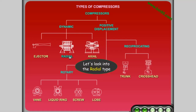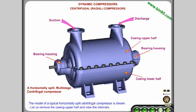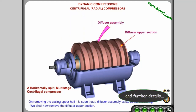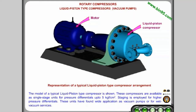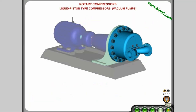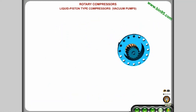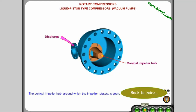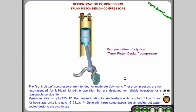Let's look into the radial type, with further details available, then back to index. Another compressor type is also covered with further details. The reciprocating trunk type is then explored.